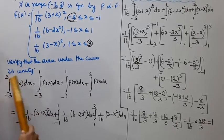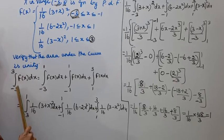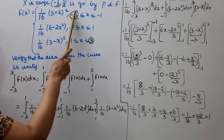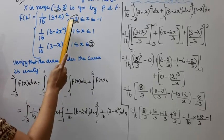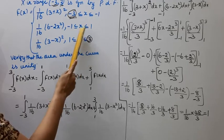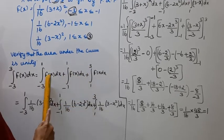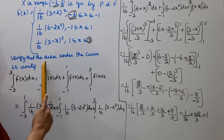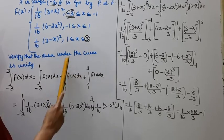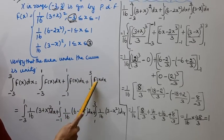To verify, we integrate f(x) from minus 3 to 3. Since f(x) is piecewise, we split it as: integral from -3 to -1 of f(x) dx, plus integral from -1 to 1 of f(x) dx, plus integral from 1 to 3 of f(x) dx.